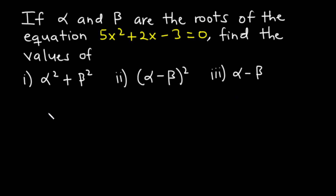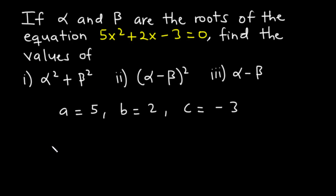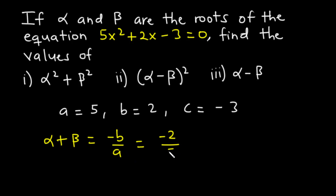Before we start solving, according to the equation we know that a is equal to 5, b is equal to 2, and c is equal to negative 3. Alpha plus beta, which is the sum of roots, is equal to negative b over a. We know that b is equal to 2, so we have negative 2 divided by a which is 5. So alpha plus beta, the sum of roots, is equal to negative 2 over 5.